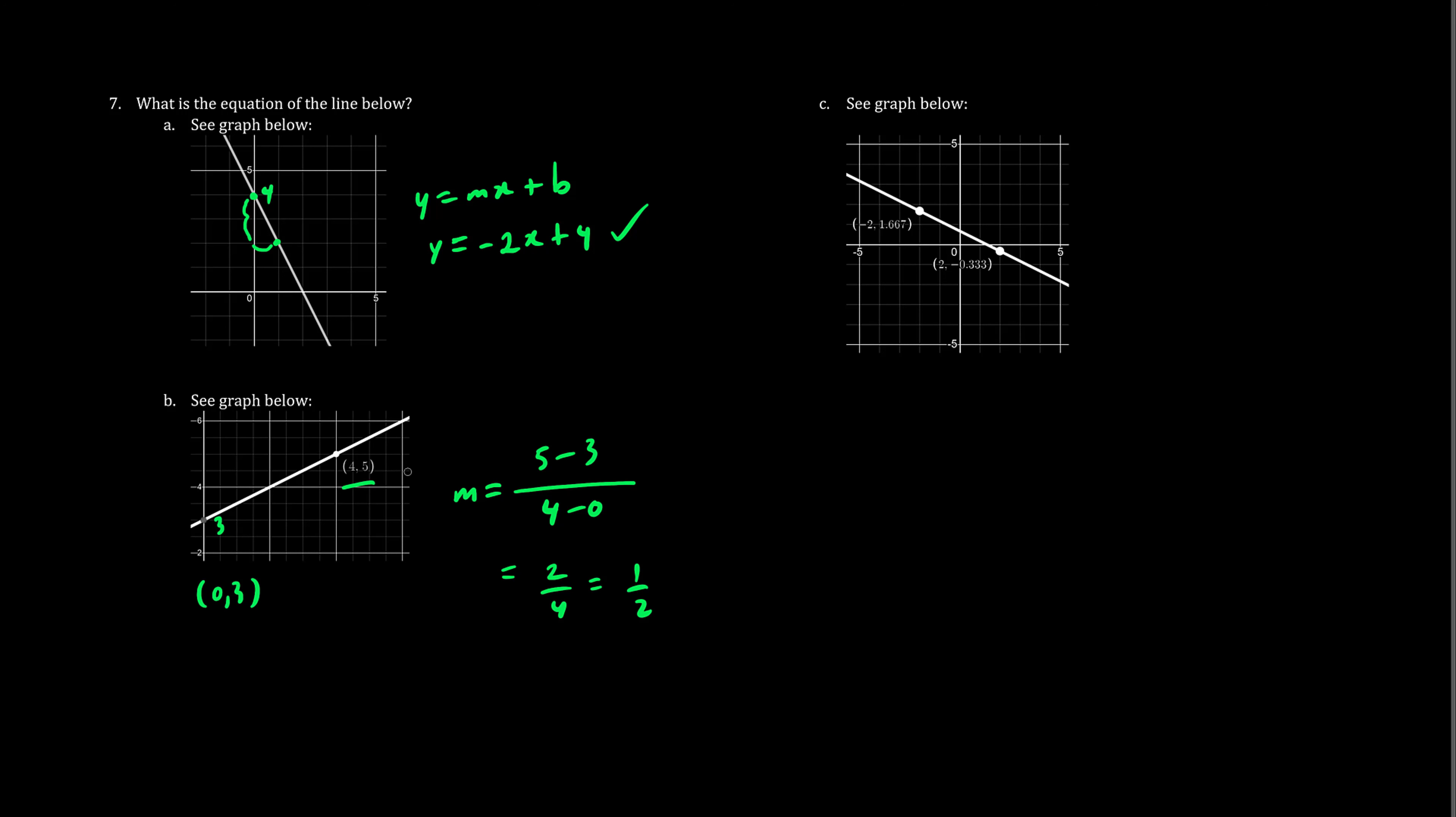We have a point, we can use either one, we'll just use four comma five. And now we use slope point form. So slope point form is y minus y1 equals m times x minus x1. And we substitute any point, either zero comma three or four comma five. Let's just substitute five here and four here.